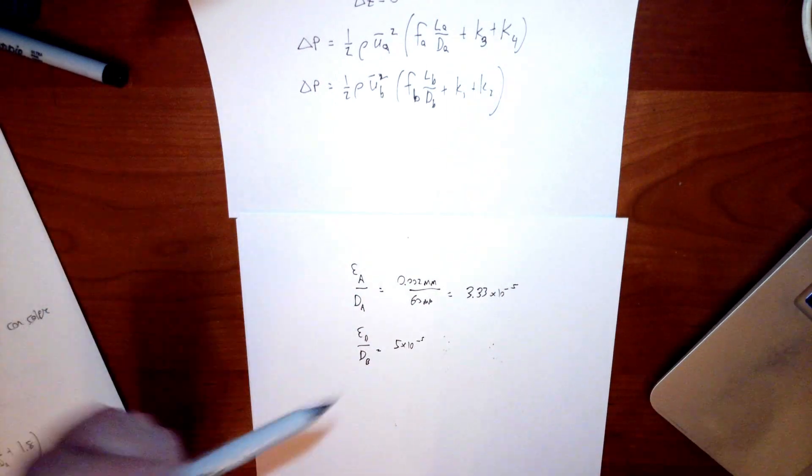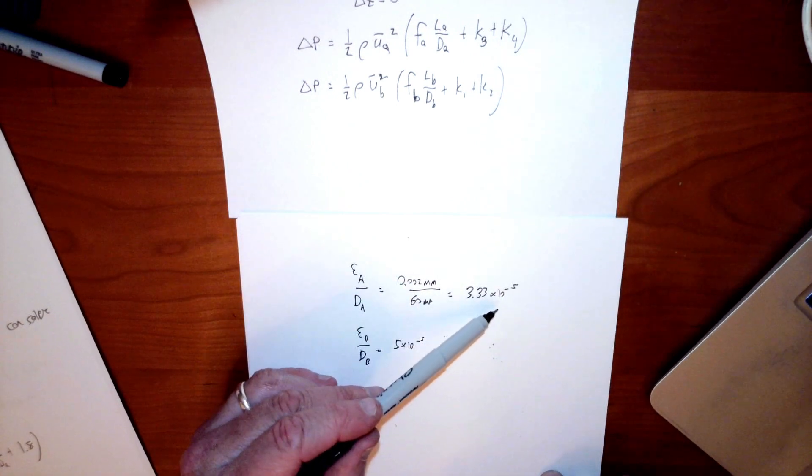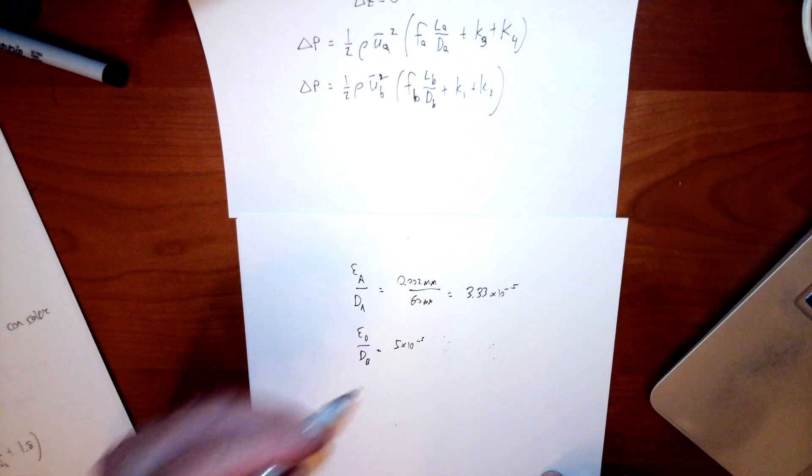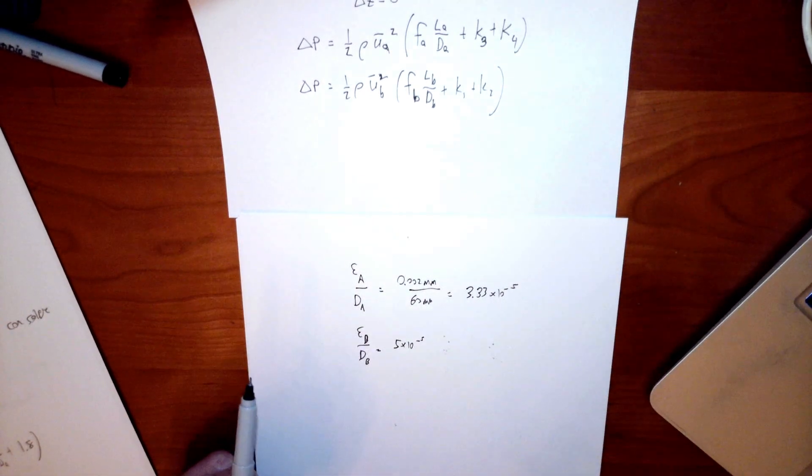So epsilon A over DA comes out to be 3.33 times 10 to the minus fifth, and epsilon B over DB comes out to be 5 times 10 to the minus fifth. So those are epsilon over D values.